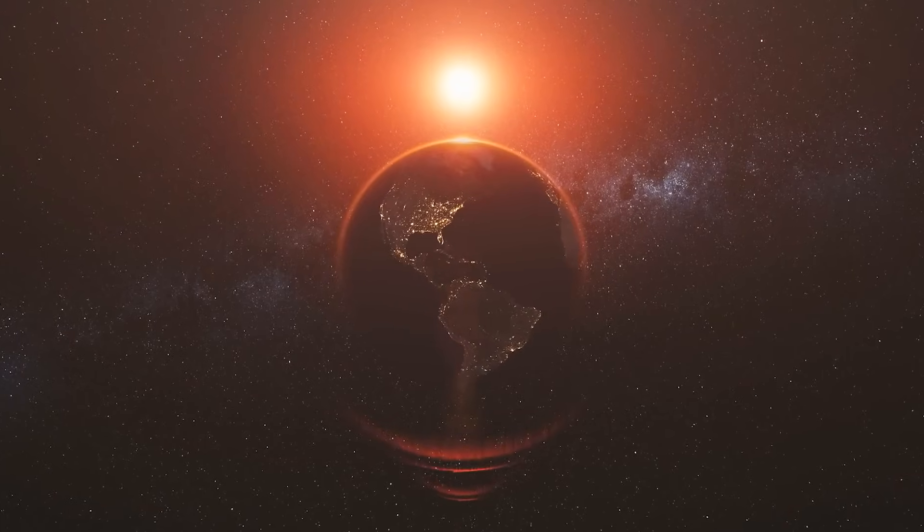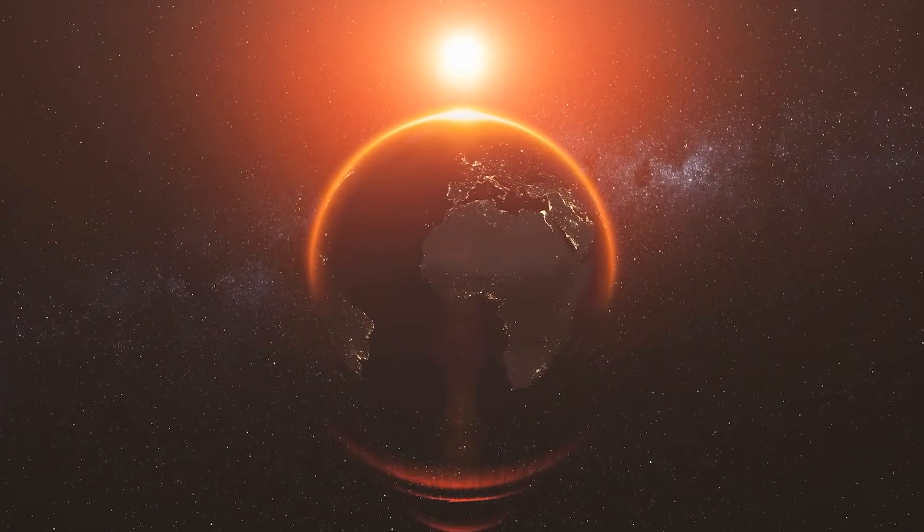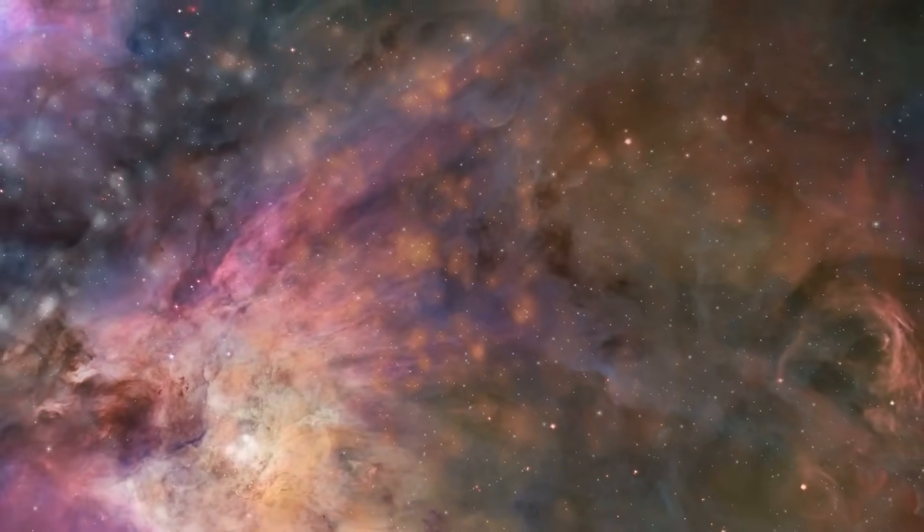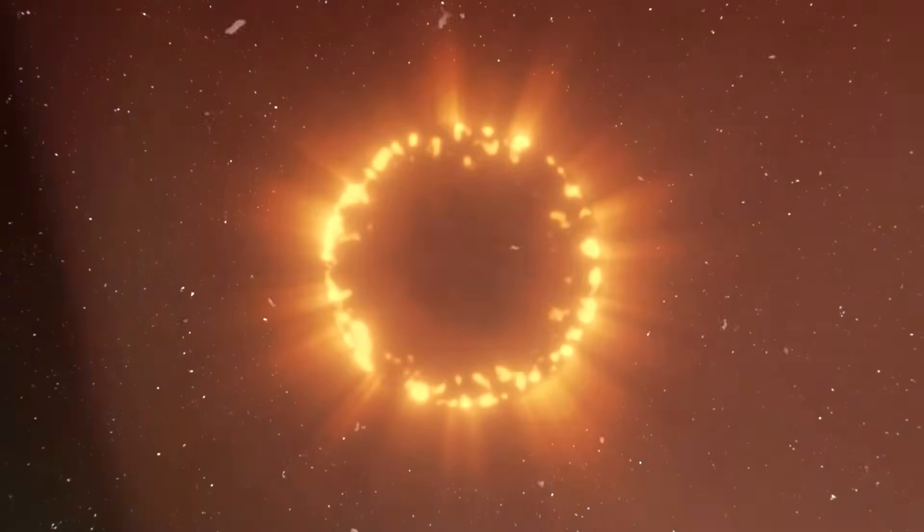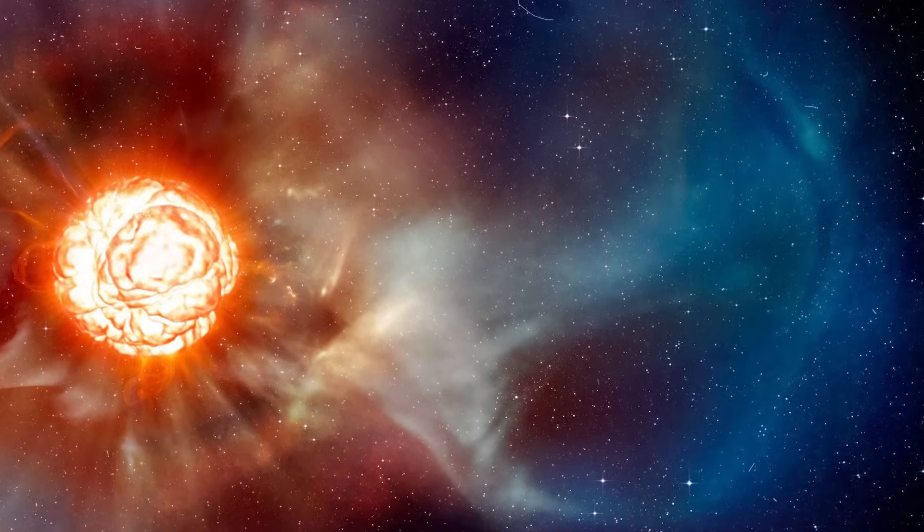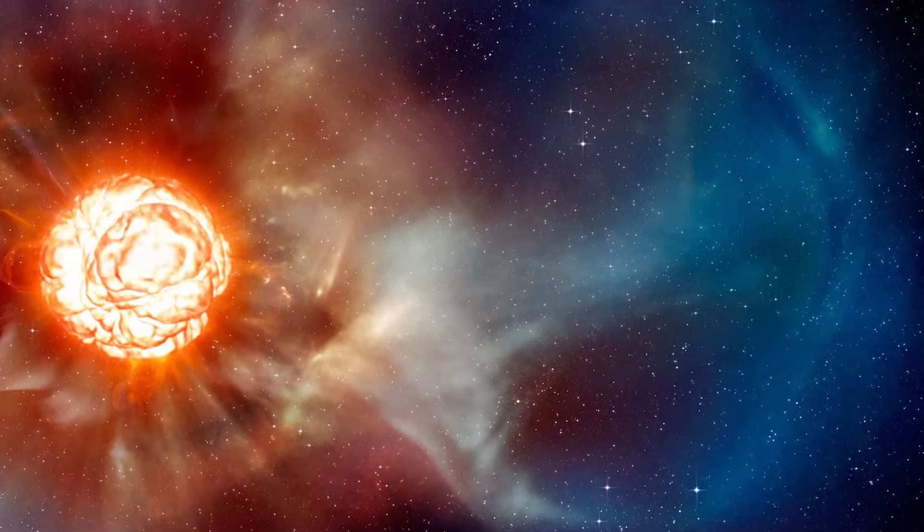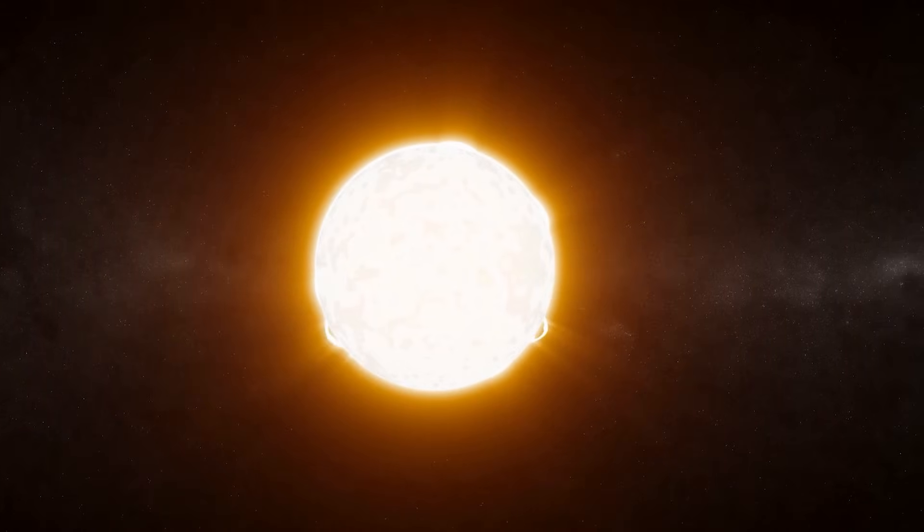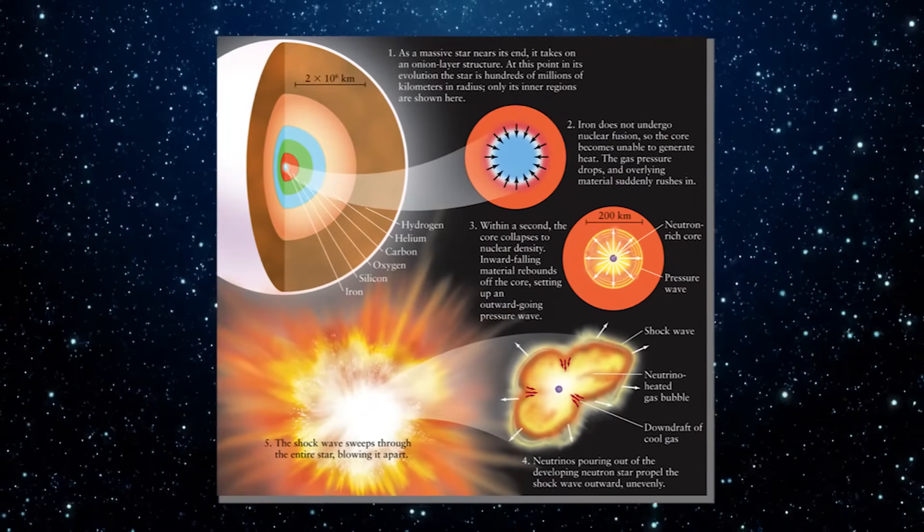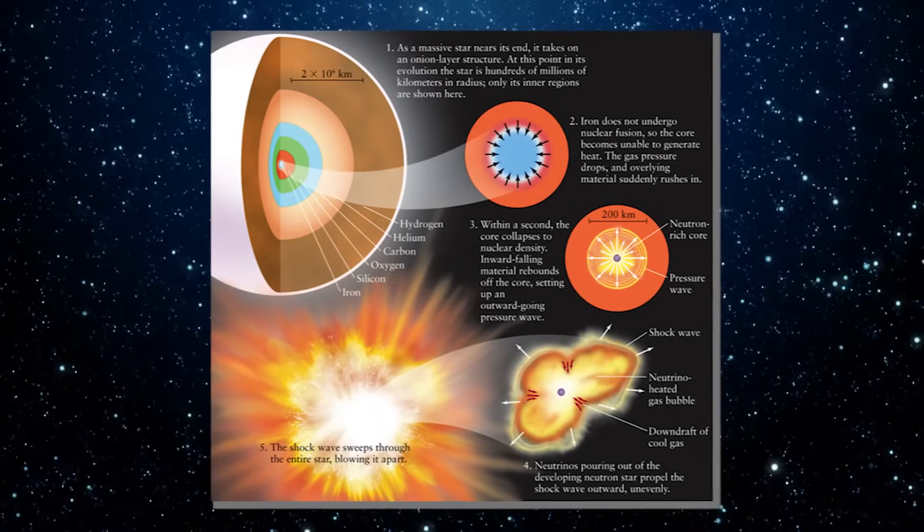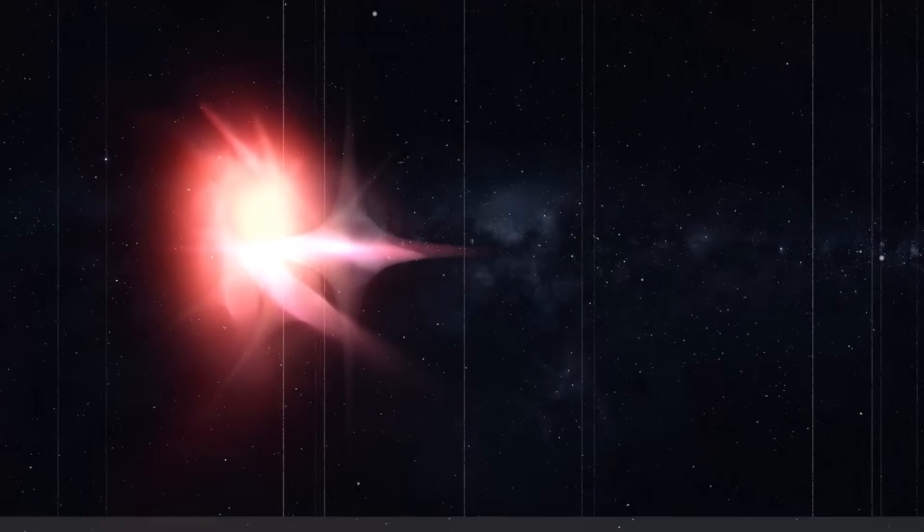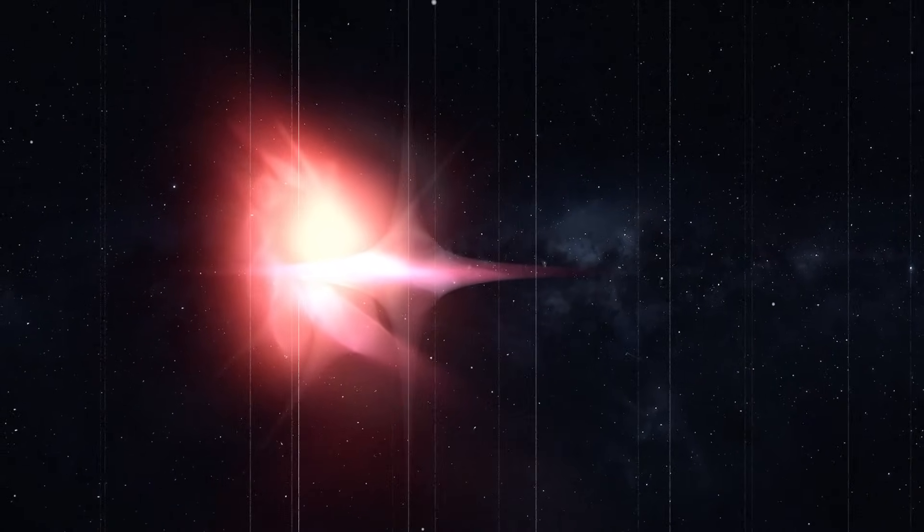This is because iron fusion doesn't generate energy. Instead, it consumes it. This leads to a rapid collapse of the core, followed by a powerful shock wave that triggers a supernova explosion. Another reason for the belief that Betelgeuse may go supernova is its pronounced dimming. While dimming can be caused by various factors like dust clouds or stellar pulsations, the rapid and significant decrease in brightness could also be a sign that the star is nearing the end of its life. Before a star goes supernova, it may undergo a phase where it ejects a significant portion of its outer layers, resulting in these dimming events. The urgency to understand and anticipate the fate of Betelgeuse gets more intense by the day.